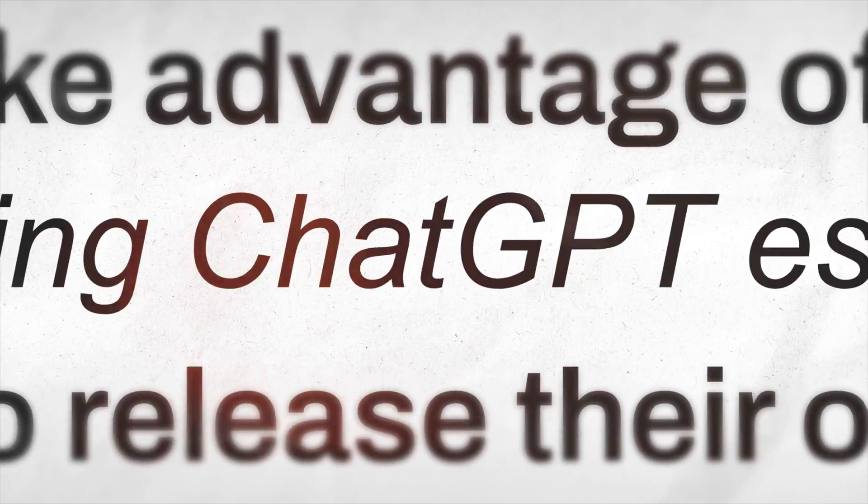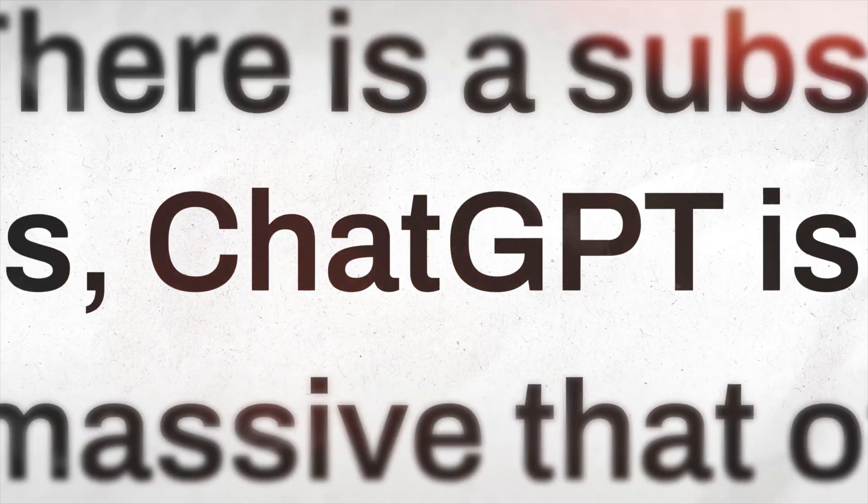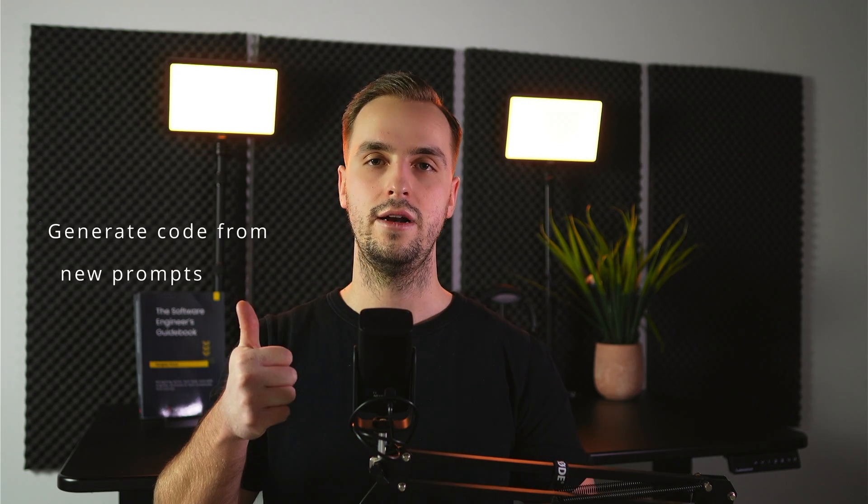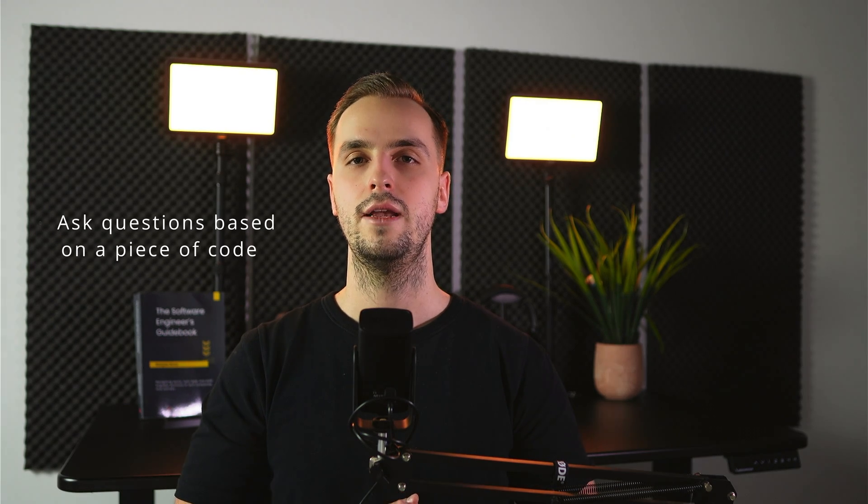But why switch code editors? Why not use Visual Studio Code with an AI tool like ChatGPT? ChatGPT is already super popular and used by almost all developers, more or less and in one form or another. The two most common ways developers use ChatGPT are to generate code from new prompts or ask questions based on a piece of code. But this combo — VS Code plus ChatGPT — has a couple of issues.